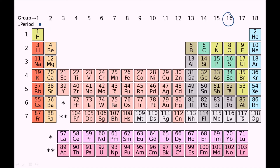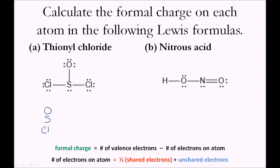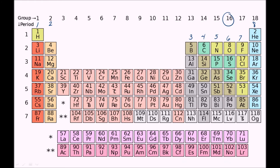Starting with group one, these have one valence electron; group two has two; over to group thirteen, these have three; then four, five, six, seven, and eight valence electrons, or a full outer shell, for group eighteen. Looking back, we want oxygen, sulfur, and chlorine. Oxygen is in group sixteen, so it has six valence electrons. Sulfur is also in this group and has six valence electrons. Chlorine has seven.